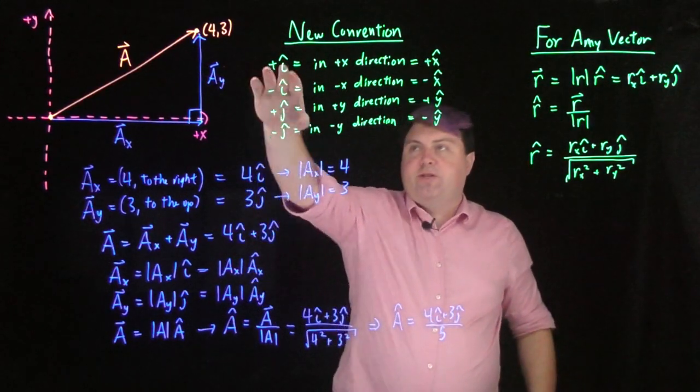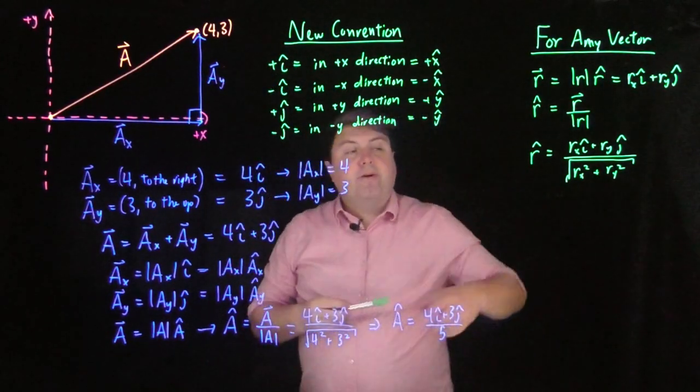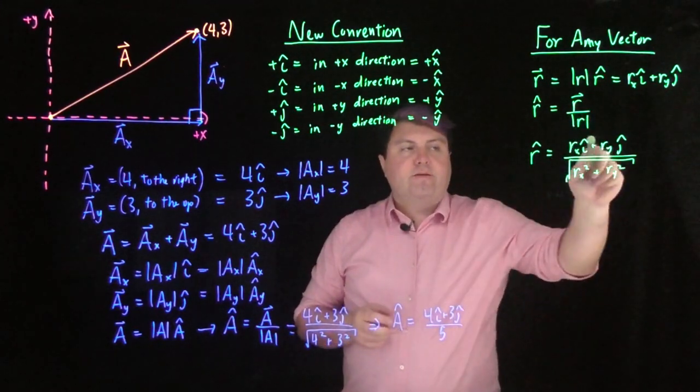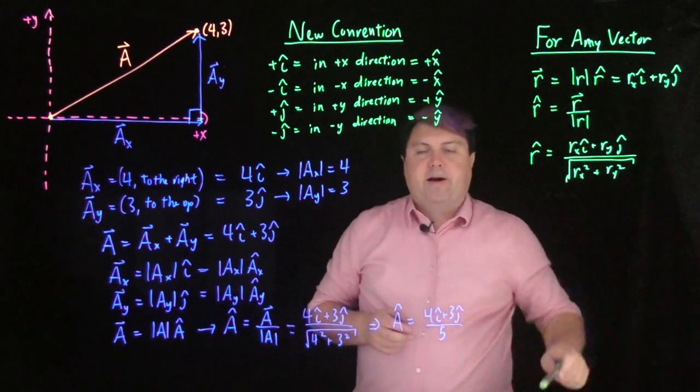So, we have this new convention of unit vectors. And for any vector, we can find its unit vector by first finding the vector, and then finding the magnitude, and dividing the vector by its magnitude.